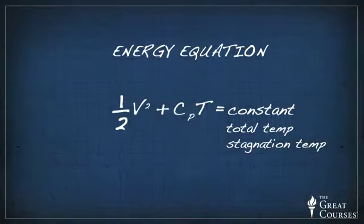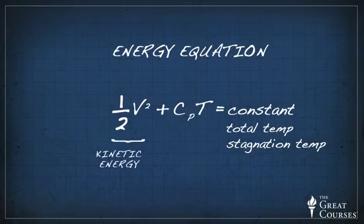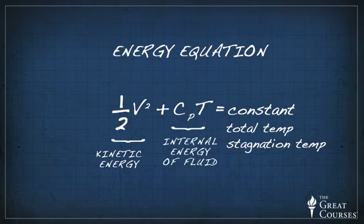Here, the energy equation describes a trade-off between the flow velocity and temperature. The velocity can be thought of as kinetic energy, while the product of CP and T can be thought of as a measure of the internal energy of the fluid. As the flow's kinetic energy increases, meaning an increase in velocity, the internal energy decreases, which is a measure of a drop in local temperature.